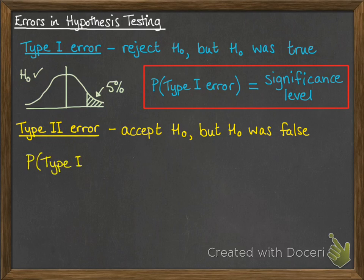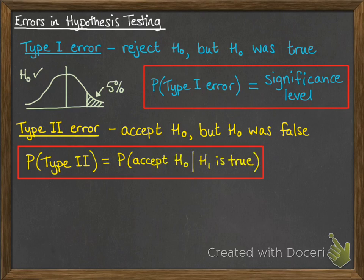This one's a little harder to work out. So this is where you've got the probability that you accepted the null hypothesis, given that your alternative was true. So to work this one out, we actually need to know some details for the alternative hypothesis. We would need to know what the new parameters were for the alternative.